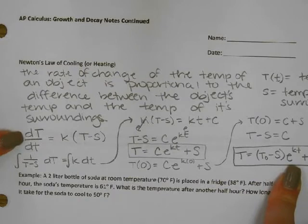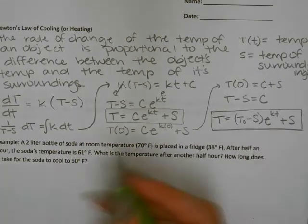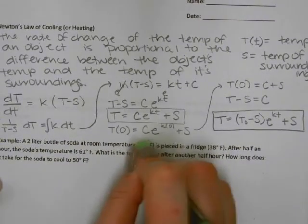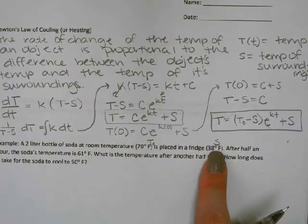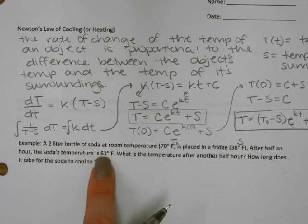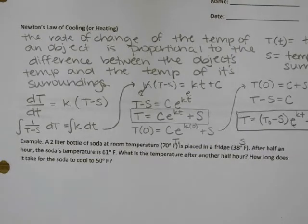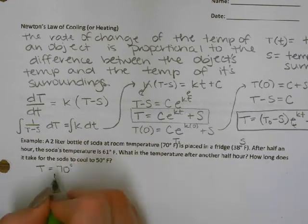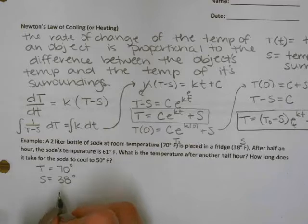Here we have a two-liter bottle of soda that is at room temperature — that's our initial value — and it is placed in a fridge, which is the surrounding temperature, because that's what's going to have an effect on it. After half an hour the soda's temperature is 61 degrees Fahrenheit. We want to find the temperature after another half hour and how long it takes for the soda to cool to 50 degrees. So we'll write down the information: initial value is 70 degrees, surroundings are 38 degrees.